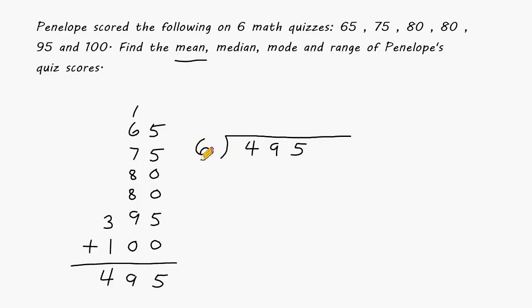6 goes into 49 8 times. 8 times 6 is 48. The difference of 49 and 48 is 1. We bring down our next place value, and there's a 5 in that place value. So now we have 15, and 6 fits into 15 twice. 2 groups of 6 is 12, leaving us with the remainder of 3.